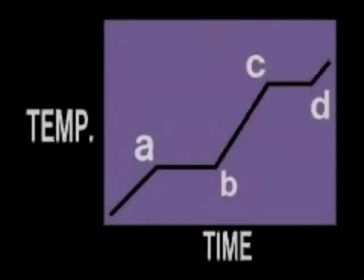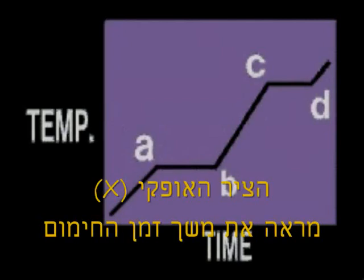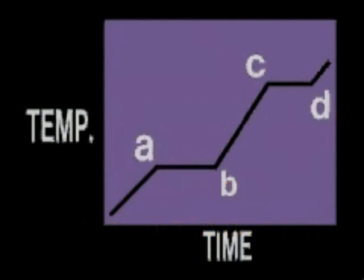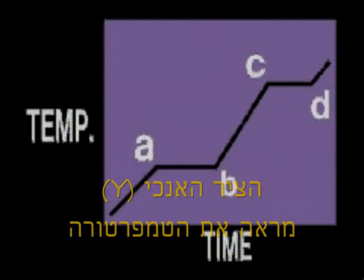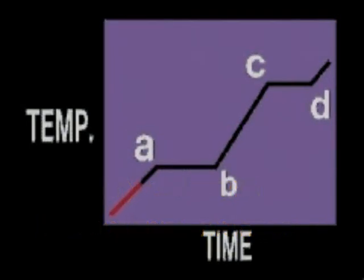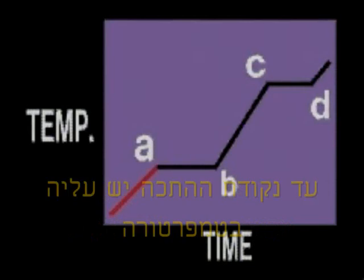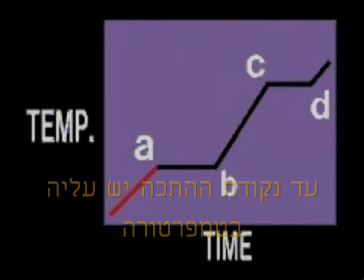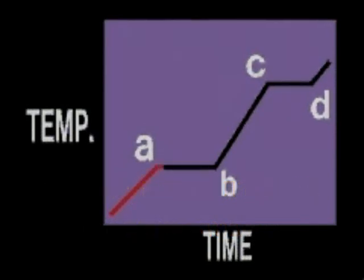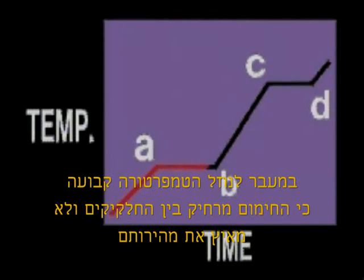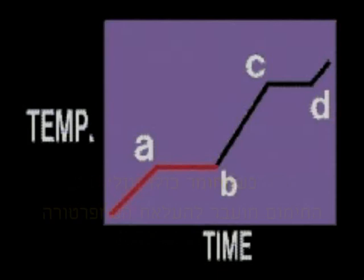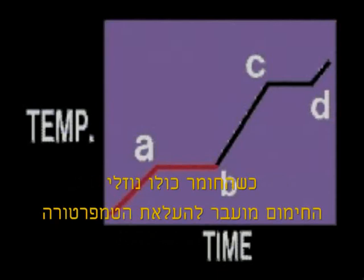On this graph of time versus temperature, the first segment represents heating of the solid. At point A, the solid melts. The temperature remains constant while melting occurs. At B, all the solid has melted, and the temperature again increases as the liquid is heated.